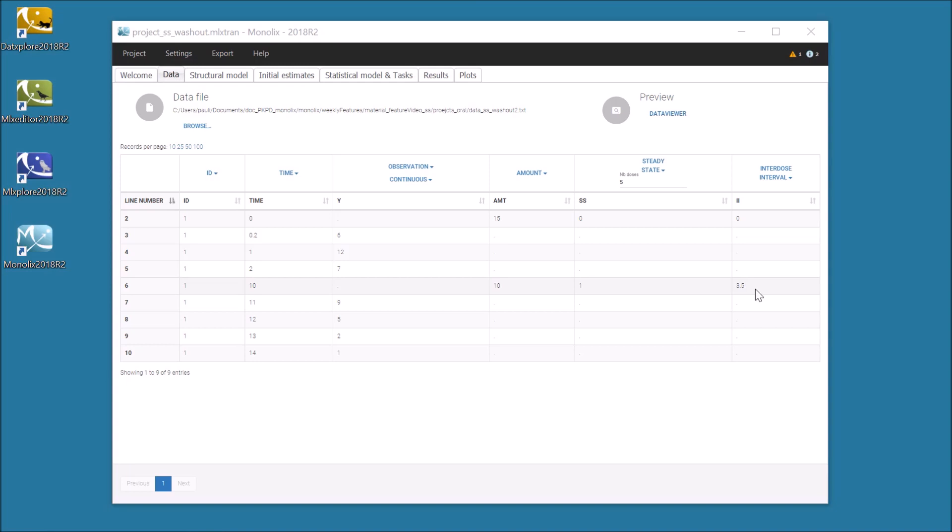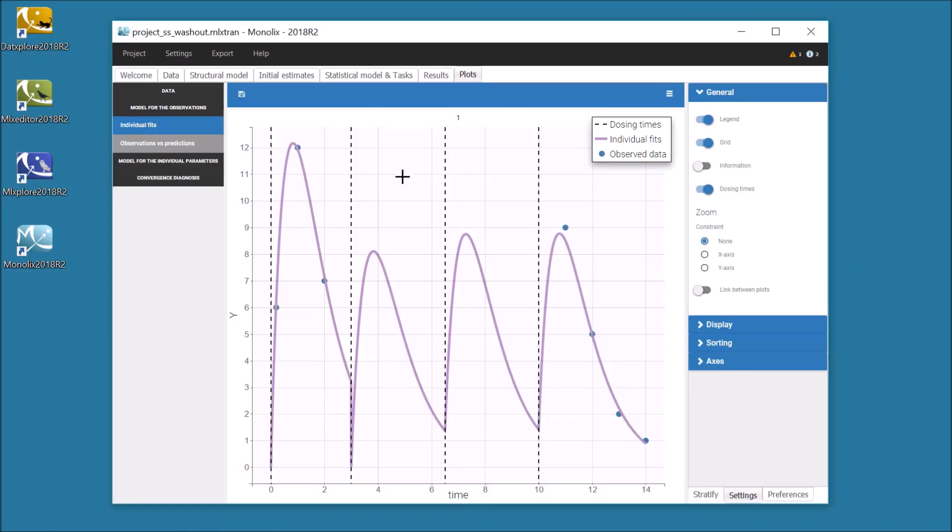So additional doses are also given before time 10. On the plot for individual 1, we can see that although 5 additional doses are specified in the interface, only 2 additional doses fit between the first observations and time 10.